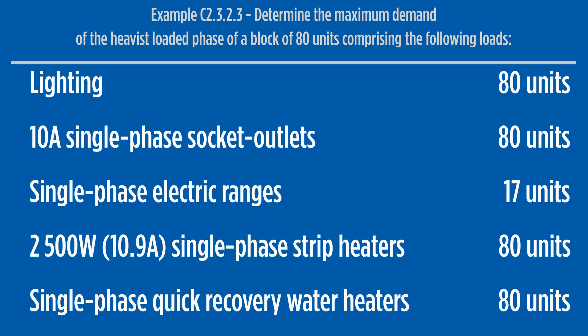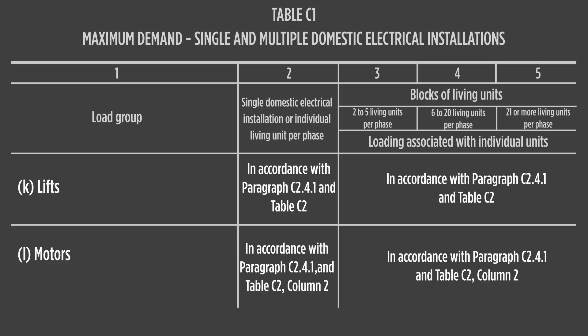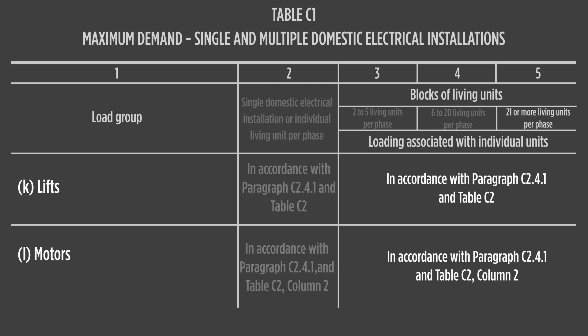As we know, the maximum demand of any three-phase installation will be the highest loaded phase. The 80 units are not evenly divided by three, so we end up with 27 units on two phases and 26 on the remaining phase. Providing that the remaining loads are equally divided, either of the phases with 27 units will provide the maximum demand current. As there are more than 21 units per phase in this installation, we will reference column 5 for calculation values.